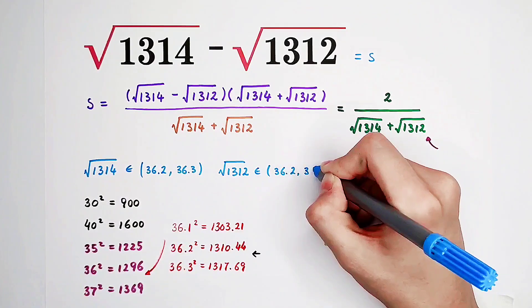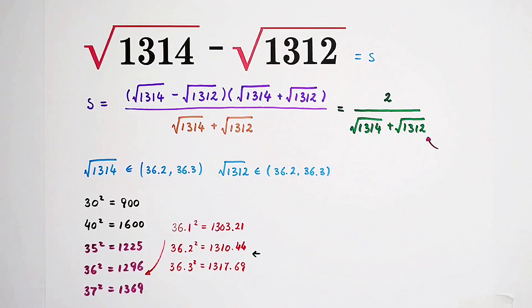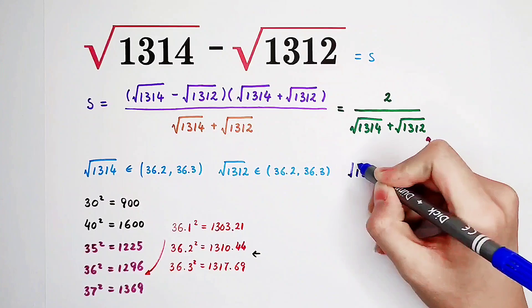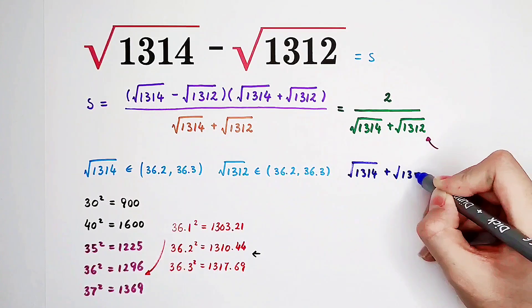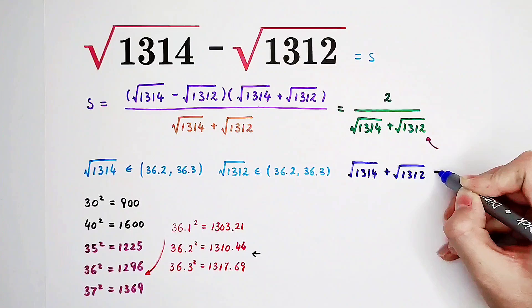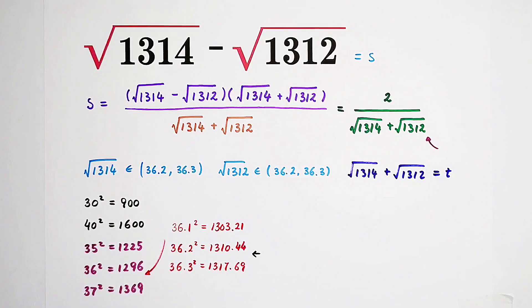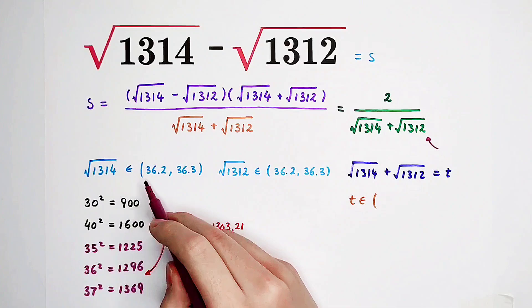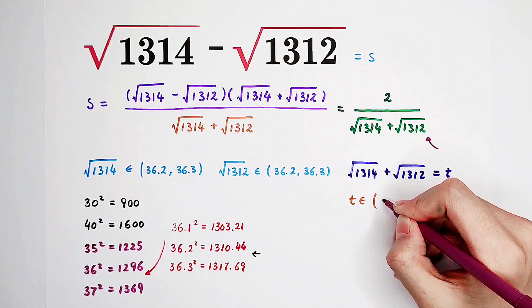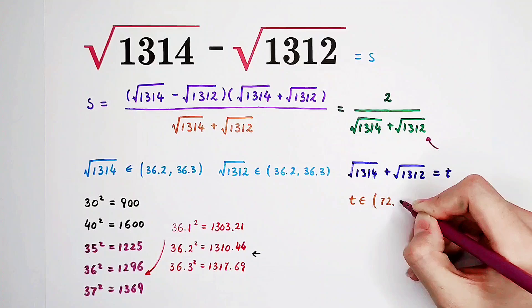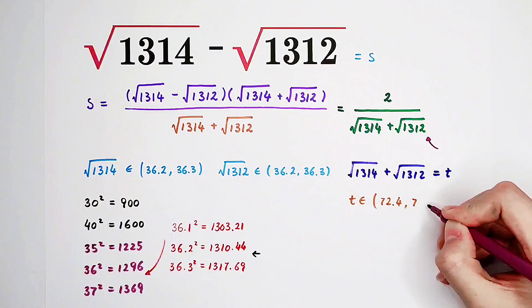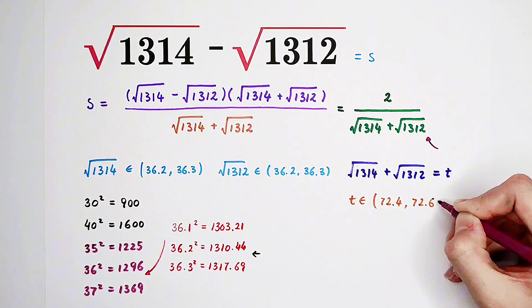Now, if we let square root of this guy plus square root of this guy, our denominator, as t. Okay, s and t, of course, natural couple. Then, our t will be between 2 times 36.2, that is 72.4, and 2 times 36.3, it is 72.6.